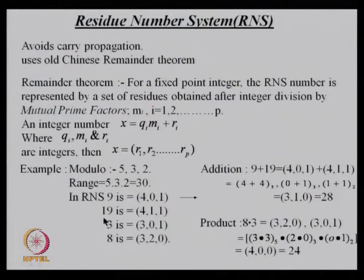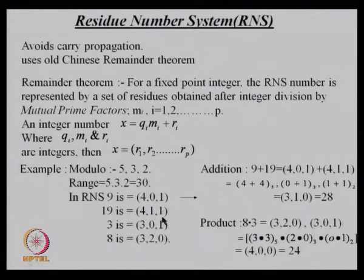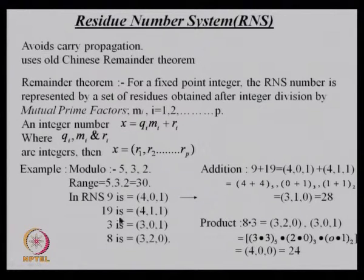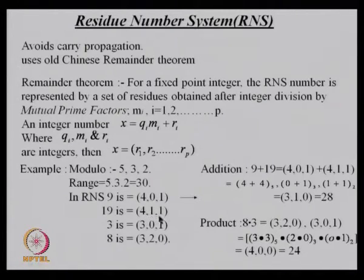Using moduli 5, 3, 2: 19 is represented as (4, 1, 1); 3 as (3, 0, 1); 8 as (3, 2, 0). The choice of modulo decides the range of numbers representable. To add 9 + 19 = 28: (4,0,1) + (4,1,1) = (8,1,2) mod (5,3,2) = (3,1,0). Checking: 28 mod 5 = 3, 28 mod 3 = 1, 28 mod 2 = 0 — correct. No carry is required in this representation because addition is done independently within each residue channel.